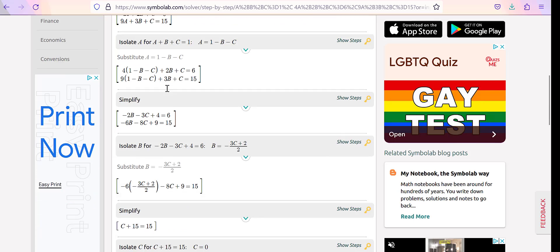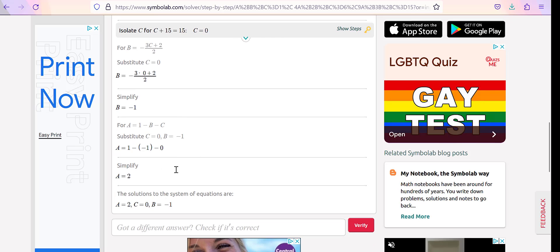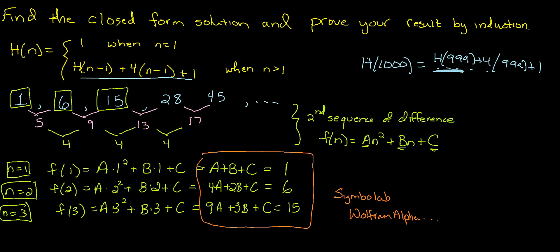What's nice is Symbolab gives you a bunch of steps, and what I'm really interested in is the final solution. So I have A equals 2, B equals negative 1, and C equals 0. So what we found from Symbolab was A equals 2, B equals negative 1, and C equals 0. So in terms of my model, which was this quadratic formula, I'm looking at F(n) equals 2n squared minus n. So now we've done the first part. Find the closed form solution. We did that.